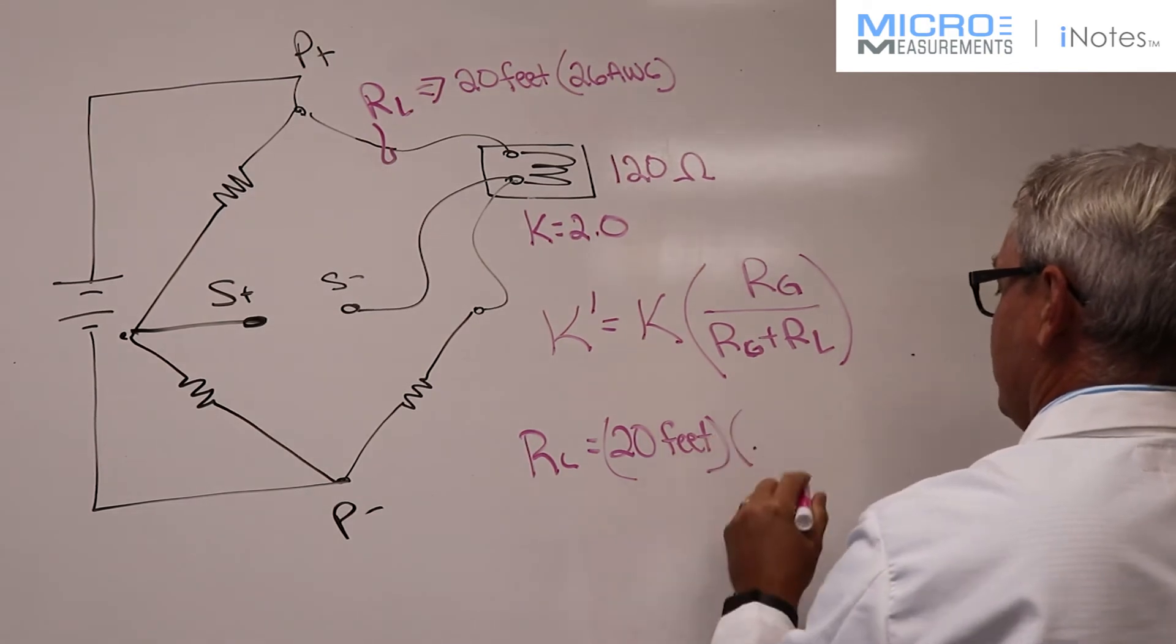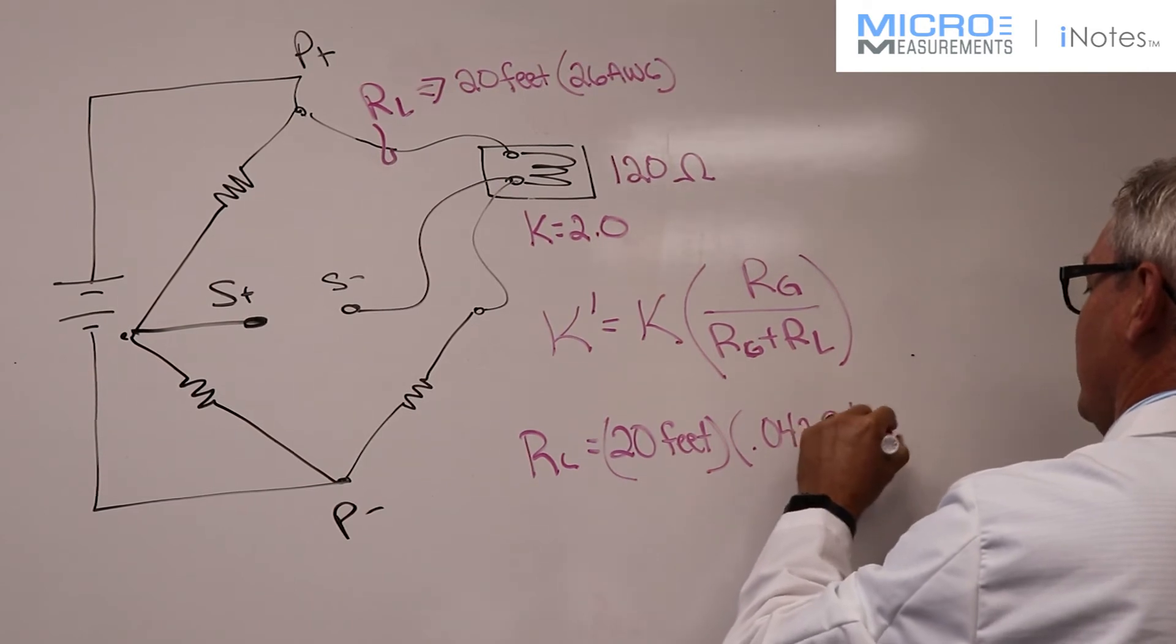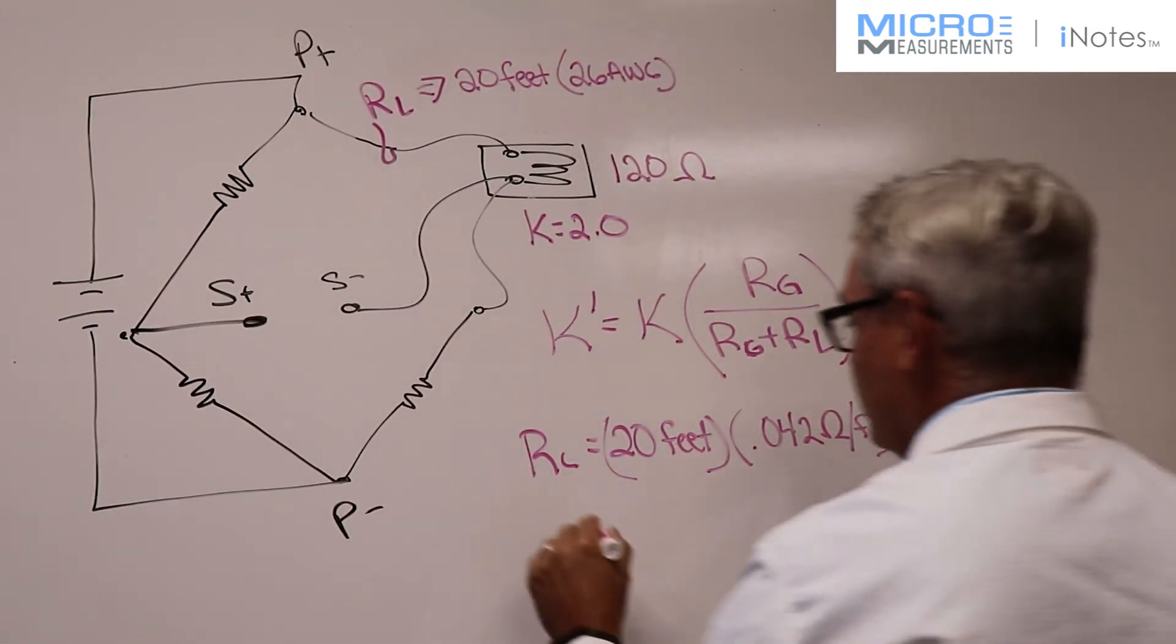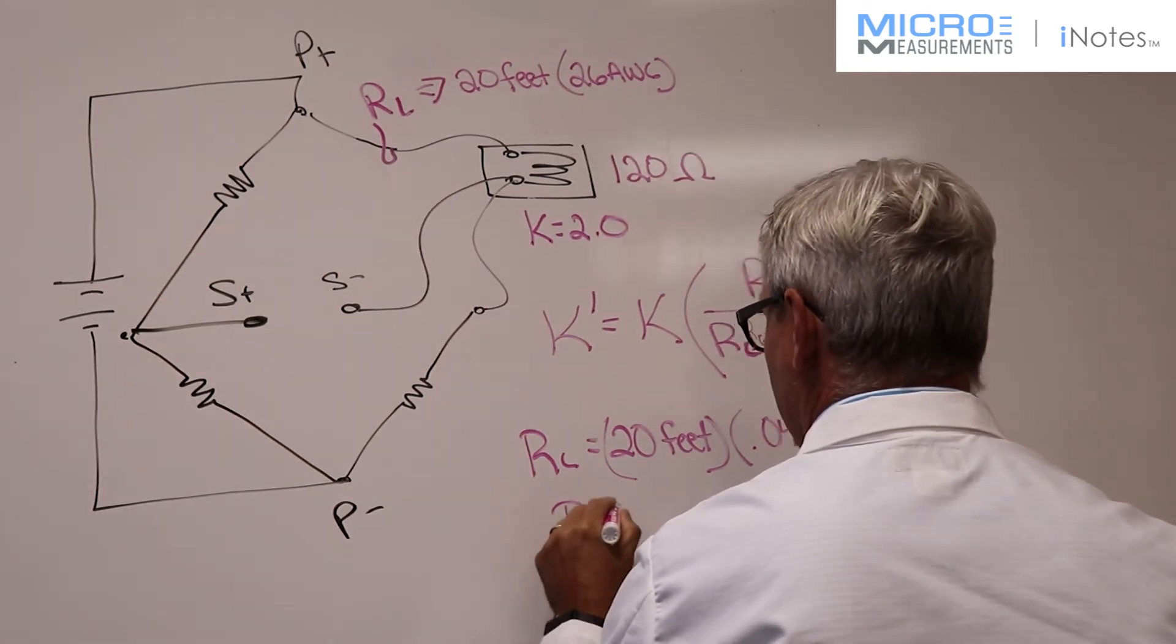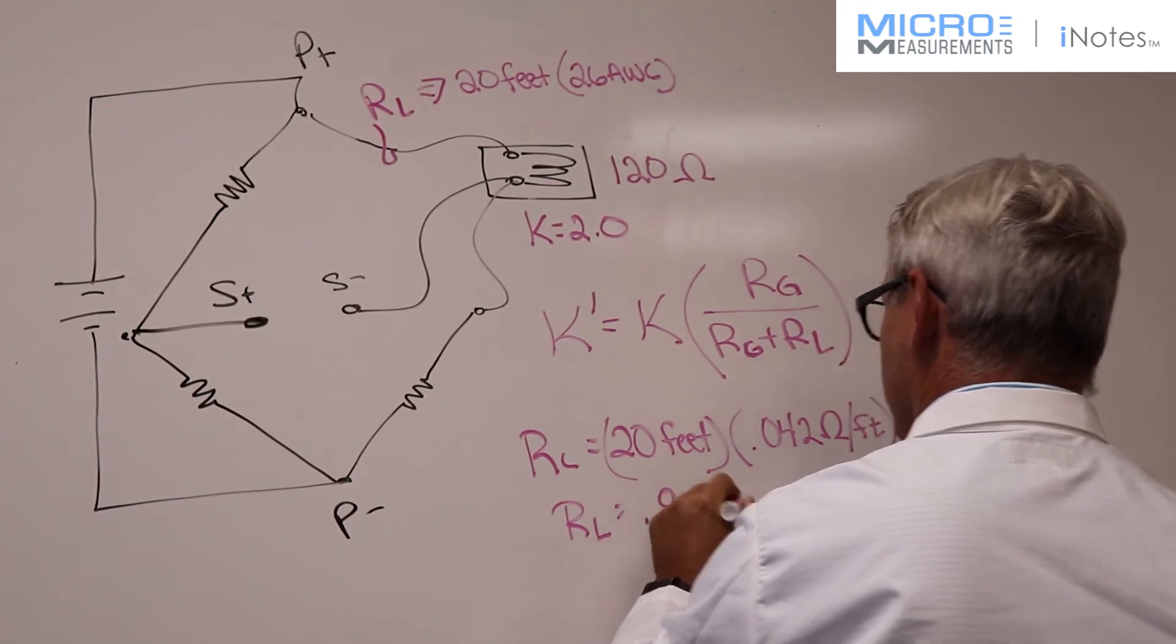So I've got 20 feet times the 0.042. That resistance is equal to 0.84 ohms.